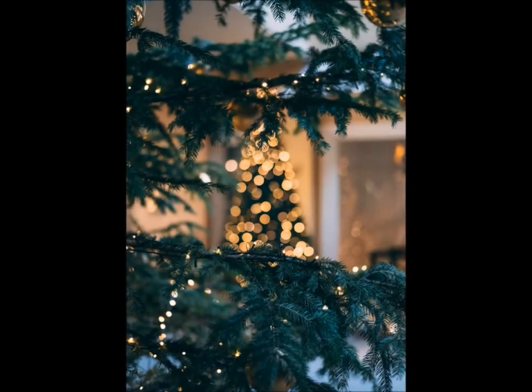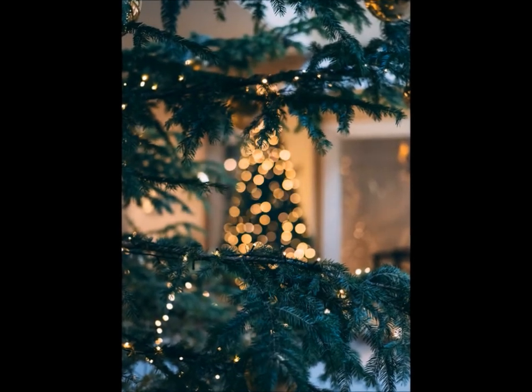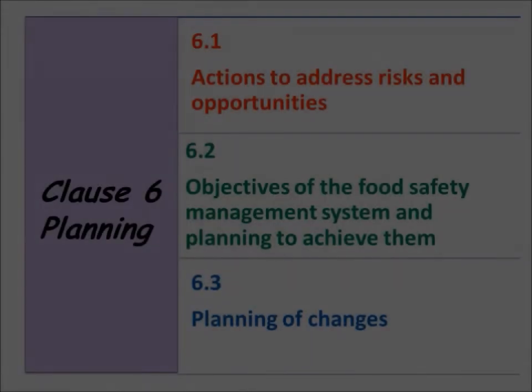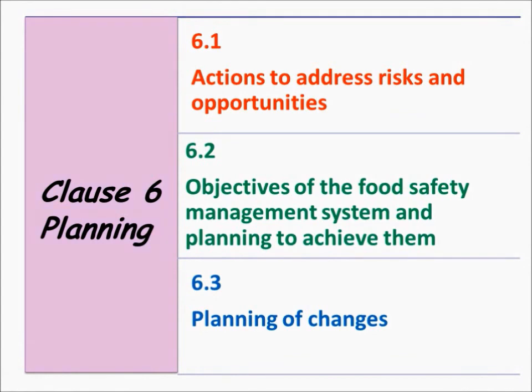Hi friends, hope that you all are ready to celebrate Christmas. This is the third video of the Food Desk under ISO 22000 playlist. Today we are talking about planning — the sixth clause of the standard. This clause is subdivided as 6.1 Actions to address risks and opportunities, 6.2 Objectives of the food safety management system and planning to achieve them, and 6.3 Planning of changes.